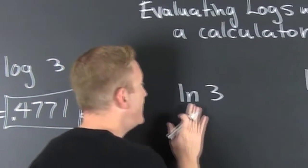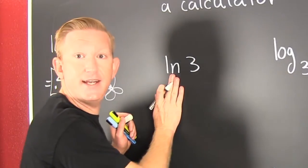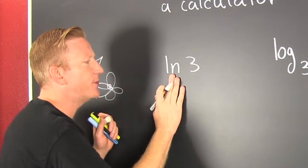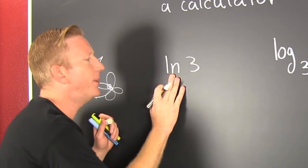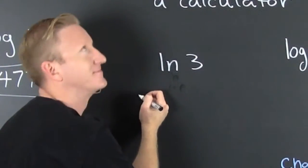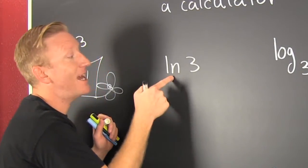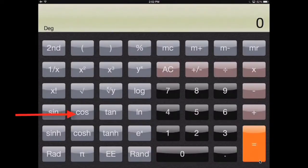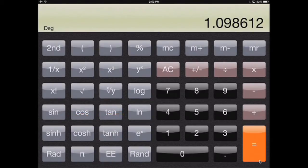That was easy. But what about this one? The natural log. Naturally, we're looking for the natural log of three, so we need to find the appropriate button — it's the LN — and we push it. I'm gonna push three and then the natural log. 1.0986. Sick!